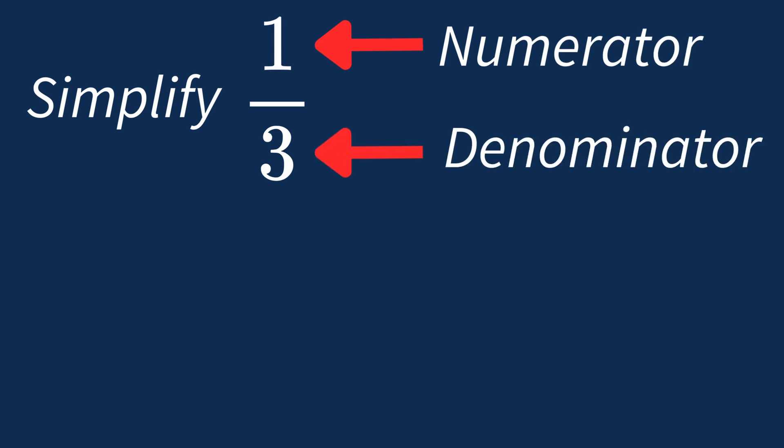A common factor is a number that can divide into both numbers evenly. Let's look at the factors for each part of this fraction. For 1, the only factor is 1. For 3, the only factors are 1 and 3.